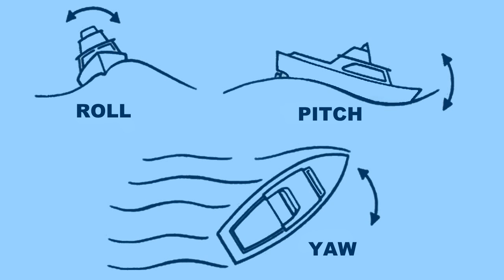Drone movement in the three axes, as for aircraft, borrows from naval terminology. Rolling is from left or right as viewed toward the front of a boat, pitching is the front moving up or down, and yawing is the boat pivoting or turning toward the left or right.